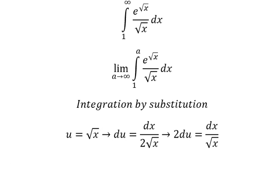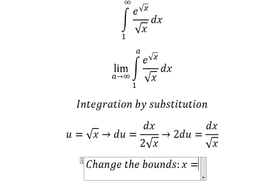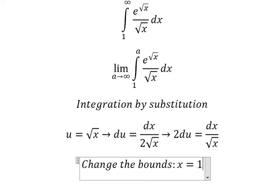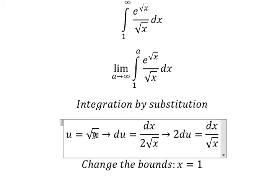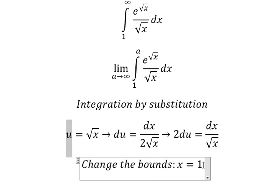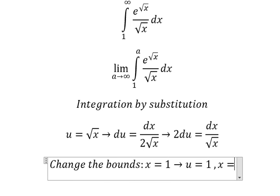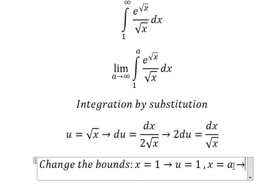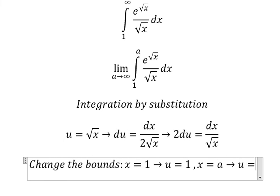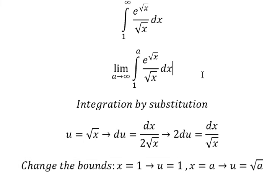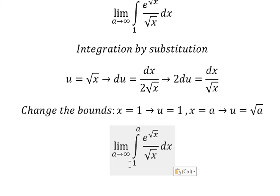Now we need to change the bounds. When s equals 1, we put 1 in here to find the value of u, and u equals 1 because the square root of 1 equals 1. When s equals a, we put this value of a in here, so u equals the square root of a.